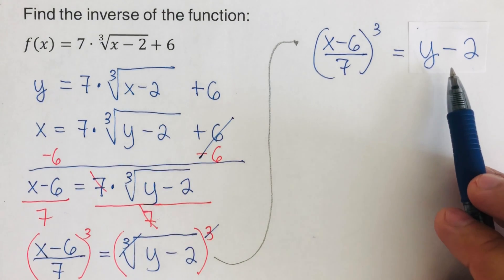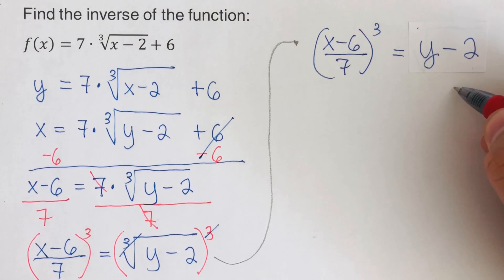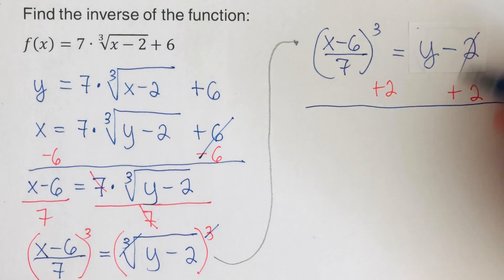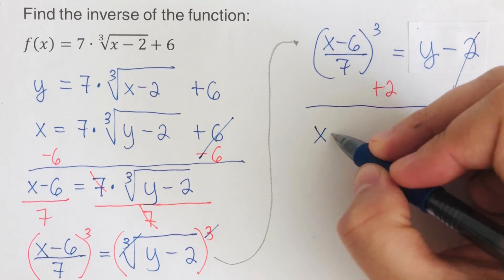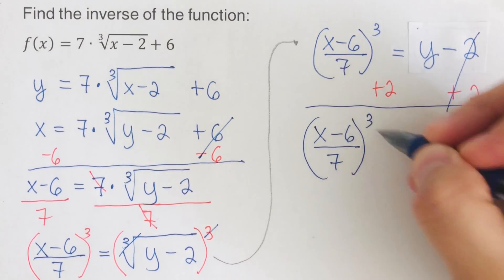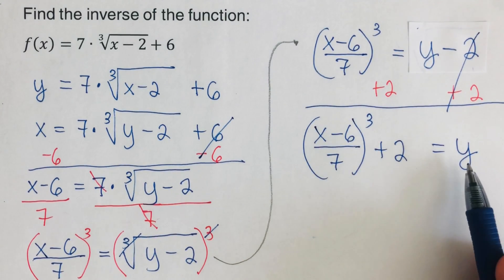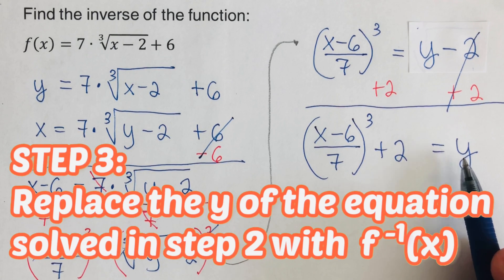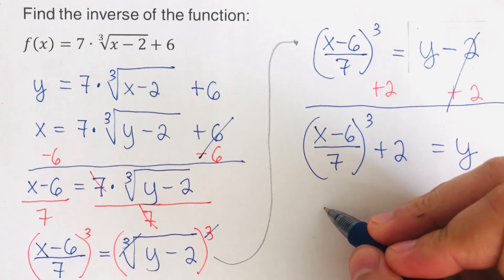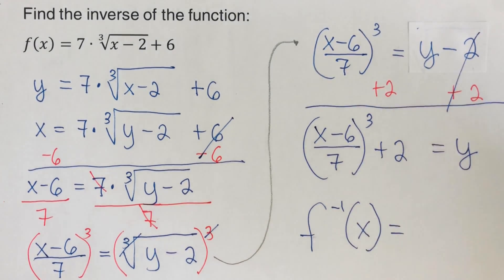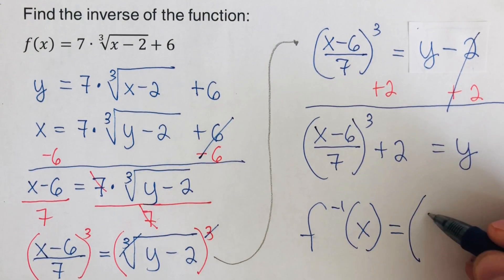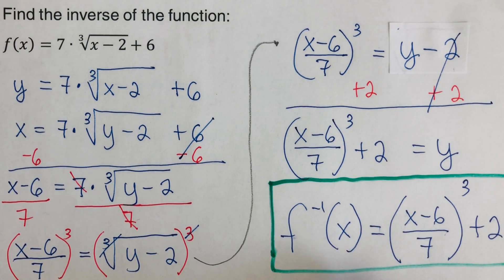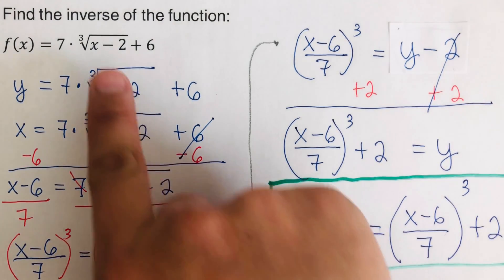We are left with this. Now add 2 to both sides so that we can have y by itself. We cross the 2 out, giving us: the quantity x minus 6 over 7, cubed, plus 2, equals y. We're ready for the last step: replace y with f⁻¹(x). So f⁻¹(x) is equal to the quantity x minus 6 divided by 7, cubed, plus 2. And this is the inverse of this function.